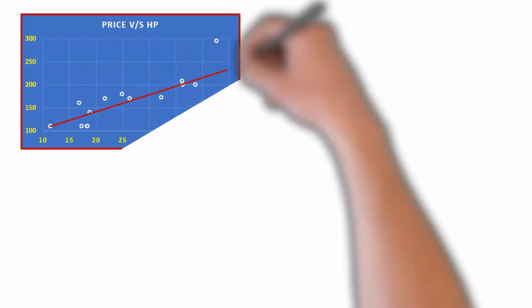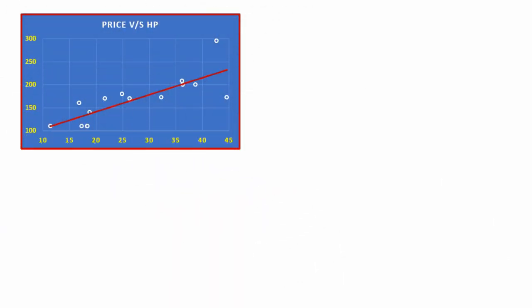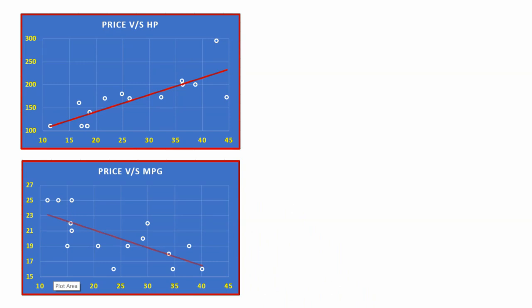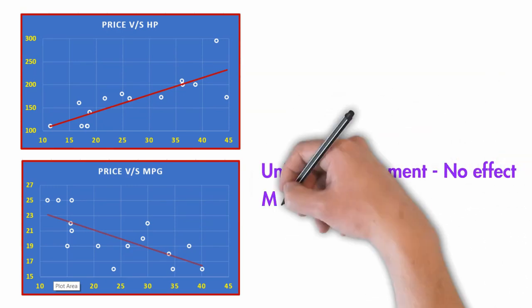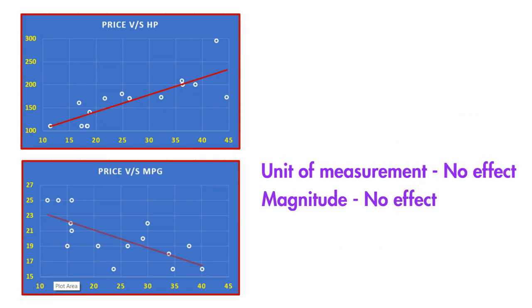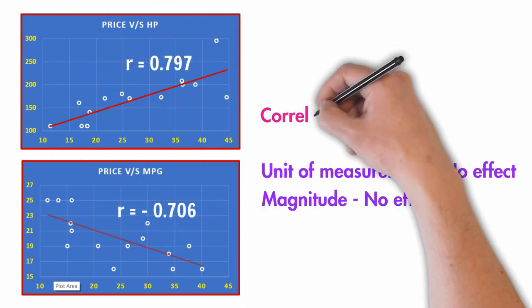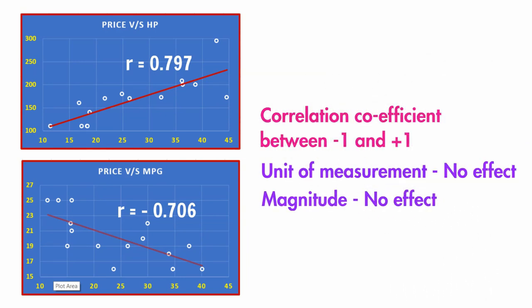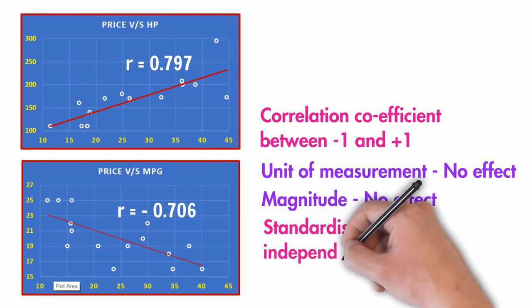In this next example, in the first chart, we have price of a vehicle on x-axis and horsepower of the engine on the y-axis. The y values are 10 times that of x values. The second graph has price on x-axis and fuel efficiency in miles per gallon on the y-axis. In both graphs, the unit of measurement for the variables is different. The second property we observe is that the unit of measurement and the magnitude of variable does not impact the correlation coefficient variables. In both cases, the correlation coefficient always stays between negative 1 to positive 1. This is a very important property when comparing two variables of different magnitude and units of measurement. It will always give a standardized output.